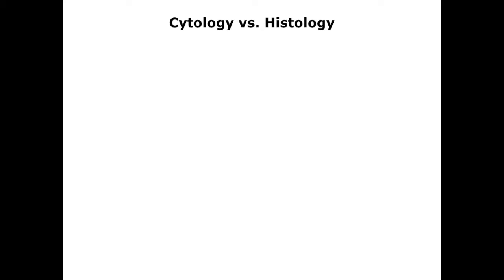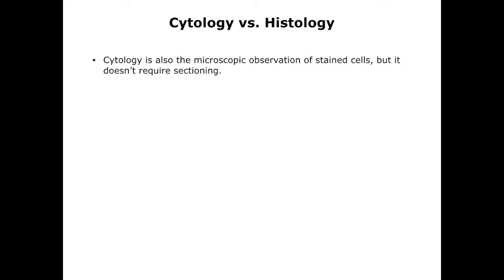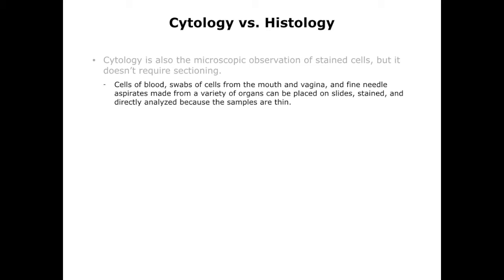Cytology is a related procedure that we need to define now in order to distinguish it from histology. Cytology involves microscopic observation of stained cells, but it does not require sectioning. In some important cases, one can obtain cells from the body in a suspension that can be analyzed directly without sectioning — for instance, blood cells, swabs from the mouth, or samples from the vagina, which is called a pap smear, and samples obtained by sticking a needle in an organ and withdrawing material, called fine needle aspirates, can be placed on a slide, stained, and directly examined, because the samples are thin.